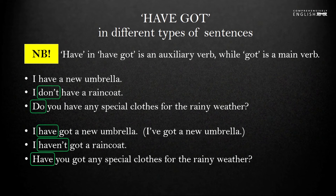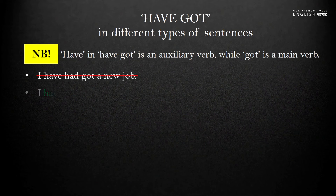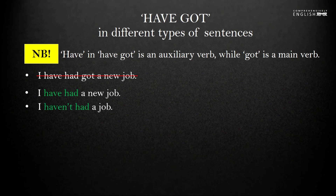What if we want to express our idea in the present perfect tense? We won't be able to do that with have got, because we cannot say 'I have had got a new job' — it's incorrect. So we can only express ideas in present perfect using the verb have, not have got. We will say 'I have had a new job.' For a negative statement: 'I haven't had a job.' And the question will be: 'Have you had a job?'